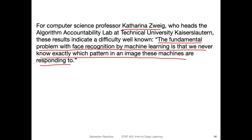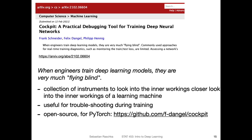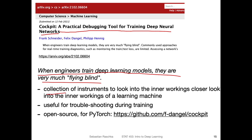Related to looking into what deep learning does and how it behaves, I also saw another interesting tool called Cockpit — also for PyTorch. It's a practical debugging tool for training deep neural networks, and it might be something helpful in a class project. The authors say that when engineers train deep learning models, they are very much flying blind. It offers a collection of instruments to look into the inner workings of machine learning models, really useful for troubleshooting during training. You can find the tool on GitHub.